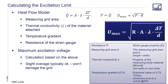The heat flow model can be calculated by knowing a few items: the measuring grid area from the datasheet, the thermal conductivity (lambda) of the material the gauge is attached to, the temperature gradient, and the resistance of the strain gauge. The maximum excitation voltage recommended can be calculated by taking the square root of the resistance times the area of the gauge times the thermal conductivity of the material times the temperature gradient. The table in our specifications assumes that the thermal conductivity is based on steel, and that the temperature gradient is limited so that the change is less than or equal to 1 micrometer per meter at room temperature.